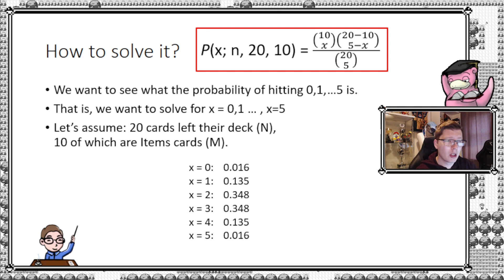We have all the things we need to plug in. We can just change x and solve it six times: one for zero, one for one, two, three, four, and five. We get the following probabilities. I rounded them at three decimals, represented in decimal numbers. With x equal to zero, the probability of hitting zero items is 1.6 percent. Following up, it will be 13.5 percent to hit exactly one, two will be 34.8, same with three, four. It's a nice symmetric distribution because the numbers are chosen very consciously: 20 and 10.